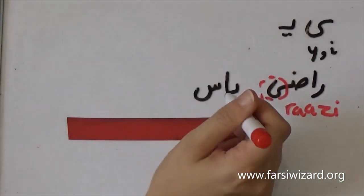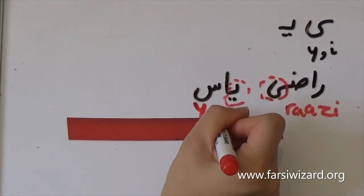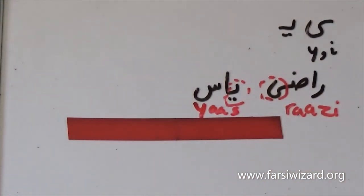Now if ye is in the middle of the word, also we will use the same form, which is the one with two dots under.